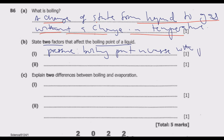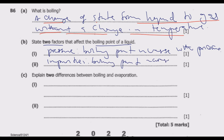The converse is true: when the pressure is lower, the boiling point reduces; when the pressure is high, the boiling point increases. Number two is impurities. The presence of impurities in a substance increases the boiling point. So boiling point increases with the presence of impurities.